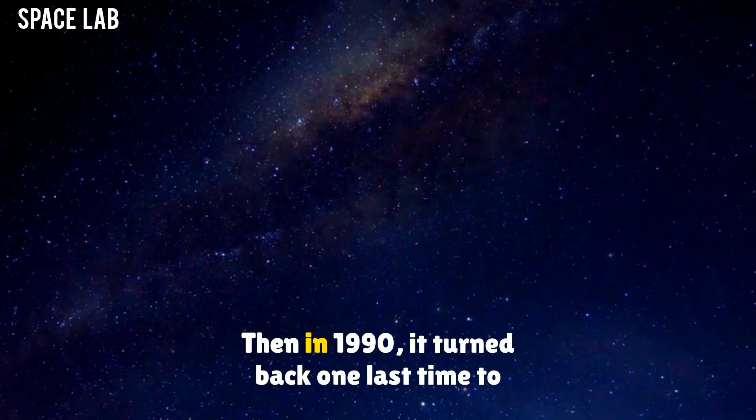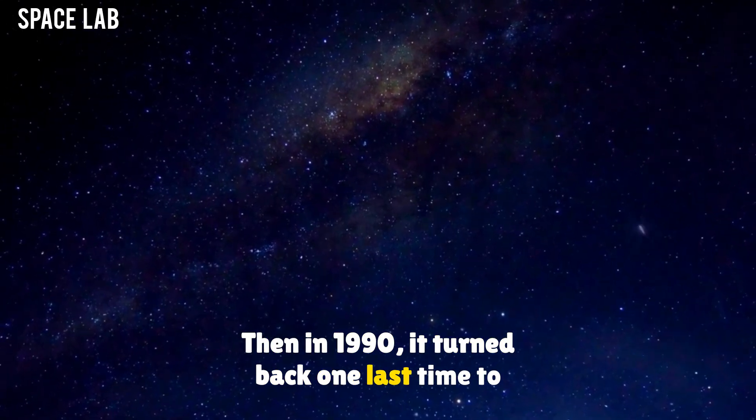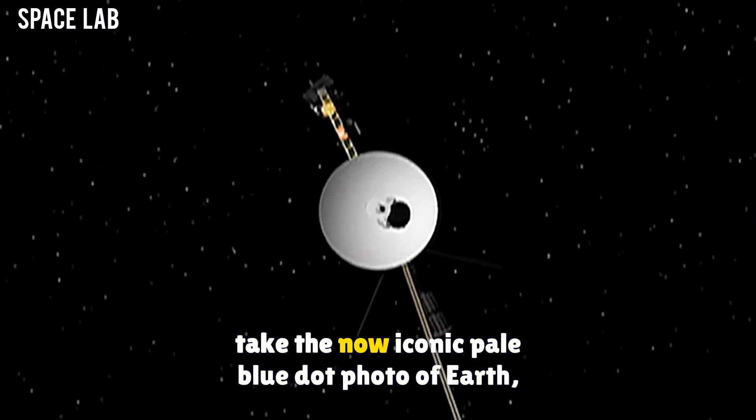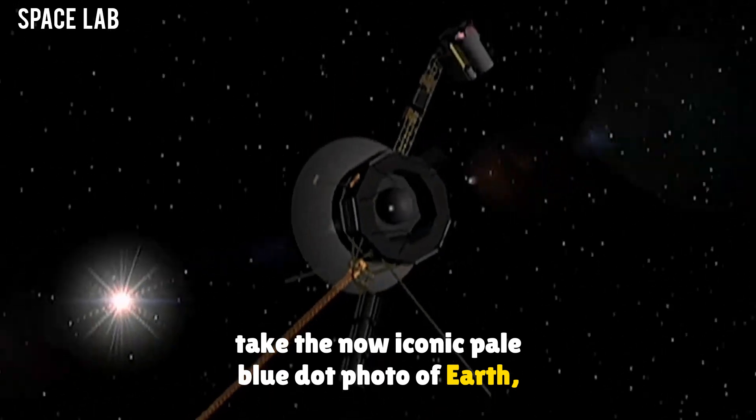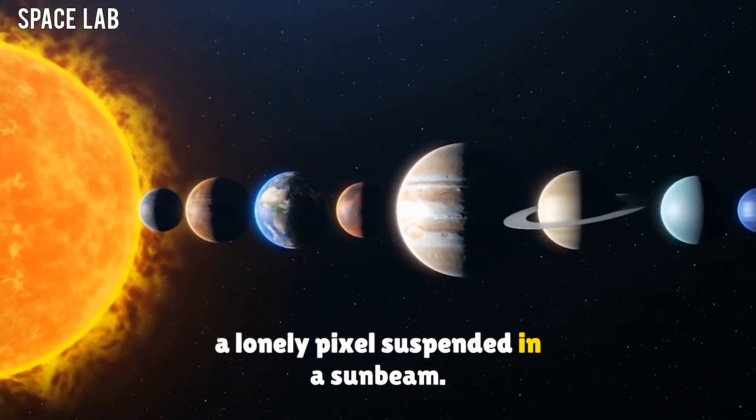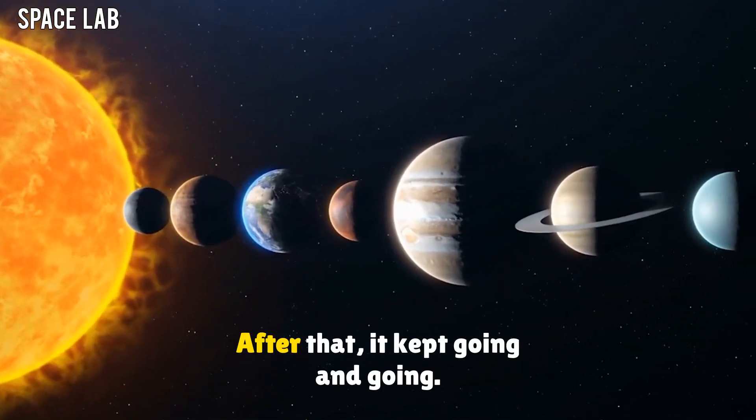Then, in 1990, it turned back one last time to take the now-iconic pale blue dot photo of Earth, a lonely pixel suspended in a sunbeam. After that, it kept going and going.